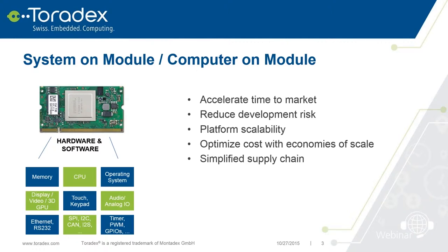A few advantages of system on modules: you can get to market much faster, you can reduce risk, and you're scalable. If there is a new SOC coming out, you don't have to redesign your whole product — you can just plug in another module. Also, it's very easy to get started. If you're familiar with a Raspberry Pi, you can use our modules. But then if you want to scale up to 100,000 units, you can use exactly the same modules, and they're really designed to be used in high volumes.